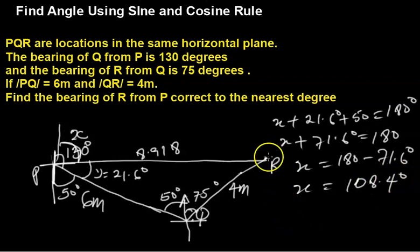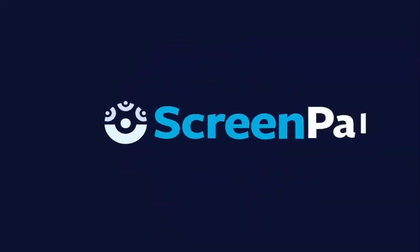Now, the question says we should go to the nearest degree. 0.4 is not up to 0.5, so I can approximate this X to now be equals to 108 degrees. Thank you, and have a very nice time.